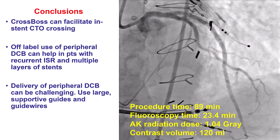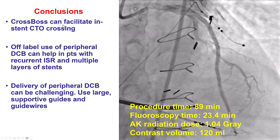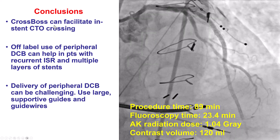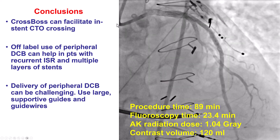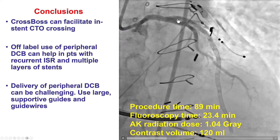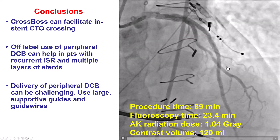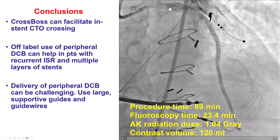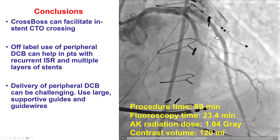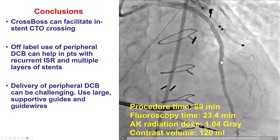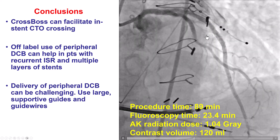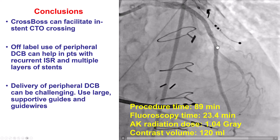So several lessons from this case. The first is that the CrossBoss catheter, which we don't use very commonly these days, can facilitate treatment of in-stent CTOs, apart from the faster crossing compared with wires. Another possible advantage may be that it is less likely to go outside the stent struts compared with a wire, given that it's a little more bulky at the distal tip.